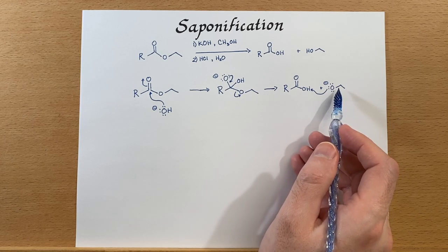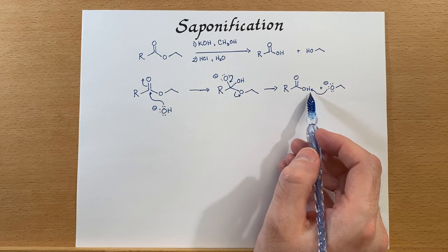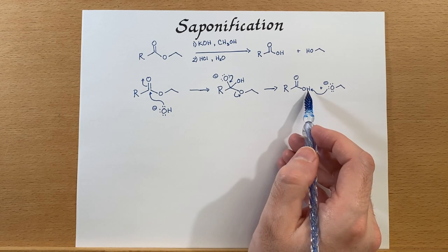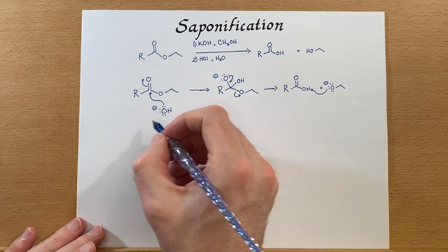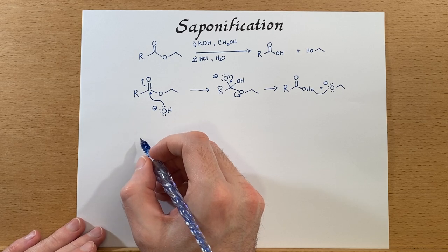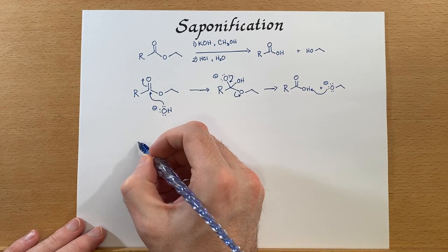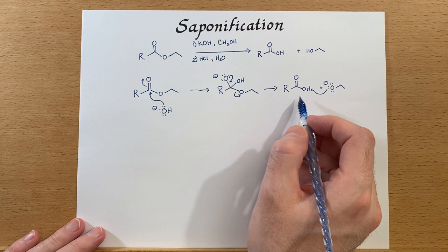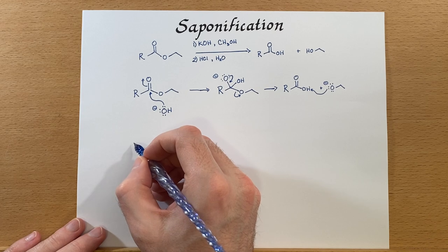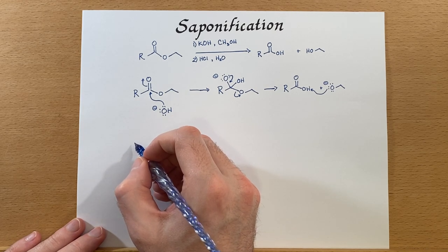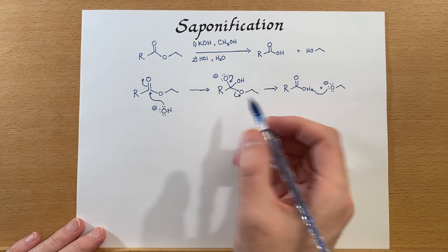In transesterification, we had an alkoxide in both cases. Here we do not — we had a hydroxide, which forms a carboxylic acid, and that will be readily deprotonated, eliminating the alkoxide from being able to attack. That's essentially why this reaction cannot go in the reverse direction: instead of attacking the carbonyl carbon, it will attack that proton. You could theoretically protect it, but essentially if you're protecting this, you're turning it back into an ester and then doing transesterification.